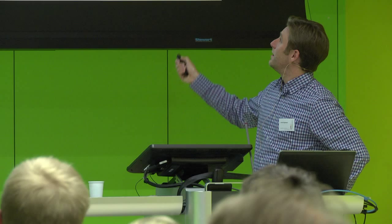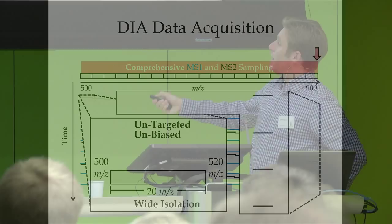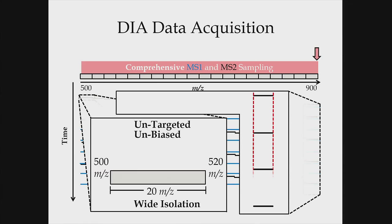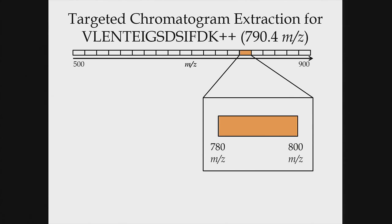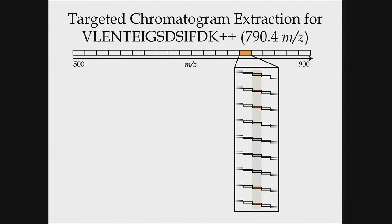Looking at this in the time domain: one key aspect is that we've acquired this MS/MS scan with the exact same measurement consistently over time. That consistent sampling is required to extract chromatograms from the data, and we've done it at a frequency fast enough to reconstruct a chromatogram. For targeted chromatogram extraction in DIA, if I'm interested in a particular peptide, the first step is to determine which isolation window it falls in. For example, 790.4 falls in the 780–800 window, and then I use the fact we sampled that window every two seconds to pull out chromatograms.